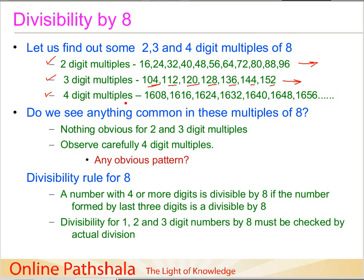Now let's have a close look at the four-digit multiples. An exercise worth doing: look at the last three digits — 608, 616, 624, 632, 640, and so on. If you divide these three-digit numbers formed by the last three digits, you'll find they are multiples of 8. By contrast, in the three-digit multiples, 4, 12, 20, 28 are not multiples of 8 even though they are multiples of 4. So in four-digit multiples we definitely see a pattern.